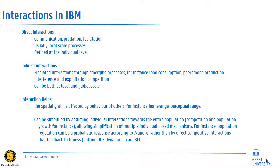These interactions are determined within spatial ranges, which we call the interaction field. This spatial grain is affected by behaviors such as home range and perceptual range. It can be simplified by assuming individual interactions towards the entire population — for instance competition and population growth — allowing simplifications of multiple individual-based mechanisms. For example, population regulation can be a probabilistic response according to population size or carrying capacity, rather than being modeled by direct competitive interactions that feed back to fitness.